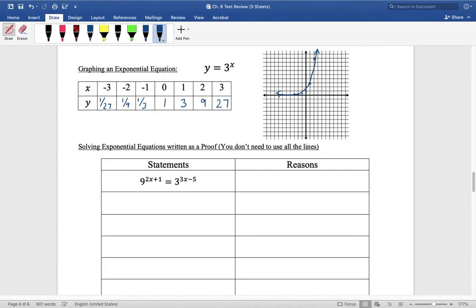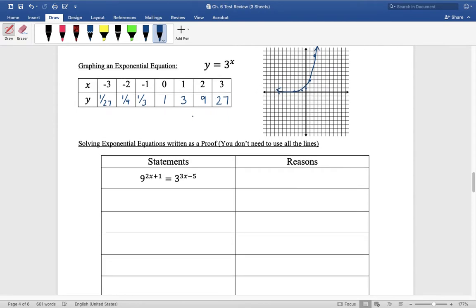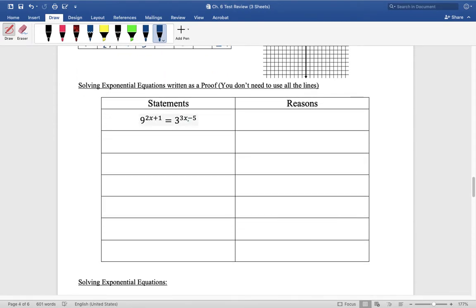Solving the equations, you have to give the statement and the reason. So here we go. First reason is given. Different bases, let's make them the same base. This is 3 squared to the 2x plus 1, and 3 to the 3x minus 5. What did I do here? I simply changed the base.